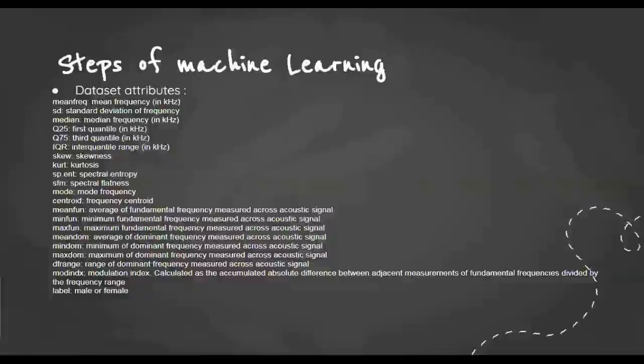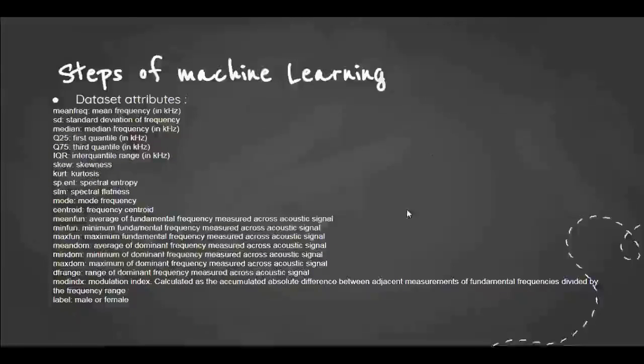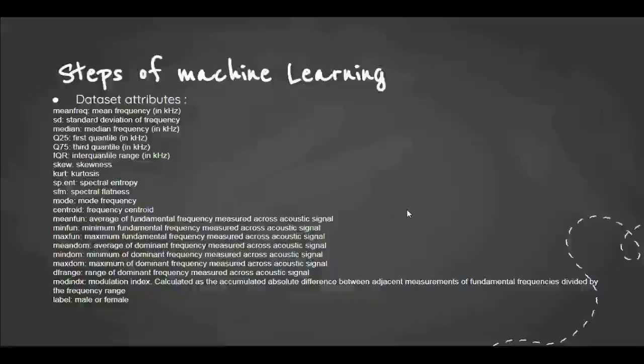Then skewness, which means symmetry of the spectral which I have formed of the audio. Then kurtosis, the sharpness of the frequencies, and spectral entropy which tells about the energy of the frequencies. Then spectral flatness, mode frequency, the centroid, average of fundamental frequency (the resonant frequency of the signals), minimum and maximum fundamental frequency, average of dominant frequency (the frequency which has the most energy), minimum and maximum of dominant frequency, DF range, modulation index, and at last the label which is female or male.